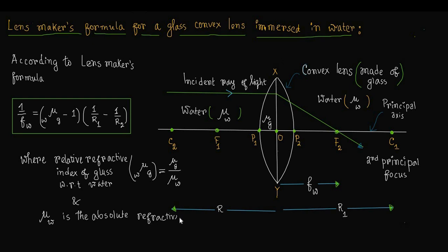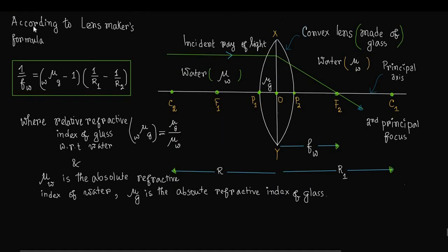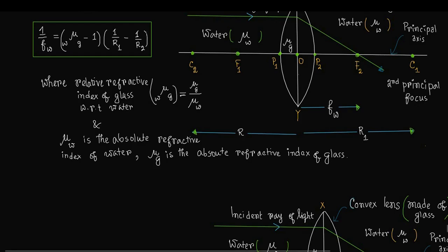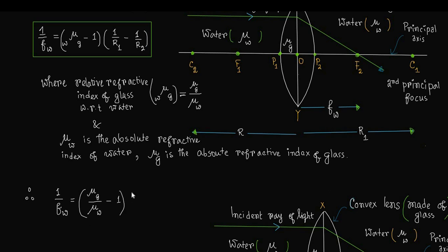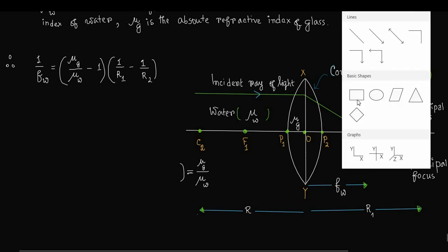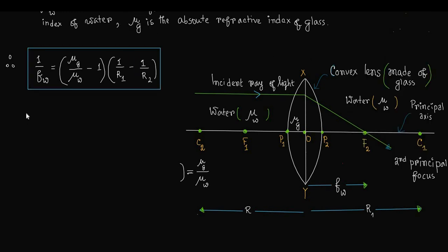w·μg equals μg divided by μw, where μw is the absolute refractive index of water and μg is the absolute refractive index of glass. Putting the expression of w·μg — that is, the relative refractive index of glass with respect to water — we get 1/fw equal to (μg/μw minus 1) into (1/r1 minus 1/r2).